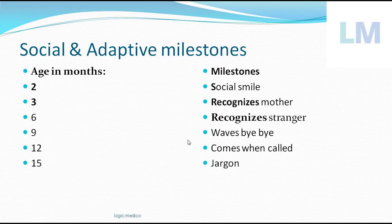At 15 months of age, the child starts telling some words which are jargons — words you will not find in a dictionary. It's its own language, called title language or jargons. It doesn't speak exactly in English or your regional language; it creates its own words. These are called jargons.